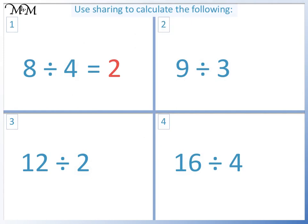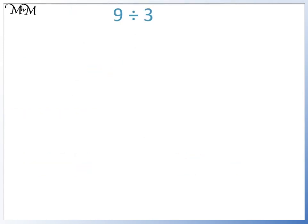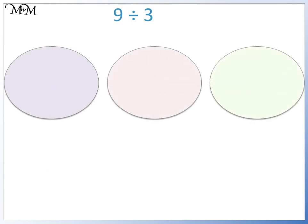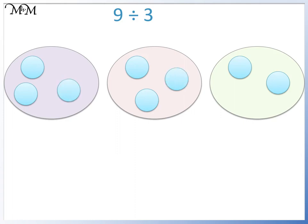Question two: nine divided by three. We are dividing by three, so we draw three circles. We want to divide nine, so we draw counters in each circle until we reach nine: one, two, three, four, five, six, seven, eight, nine. There are three counters in each circle, so nine divided by three equals three.